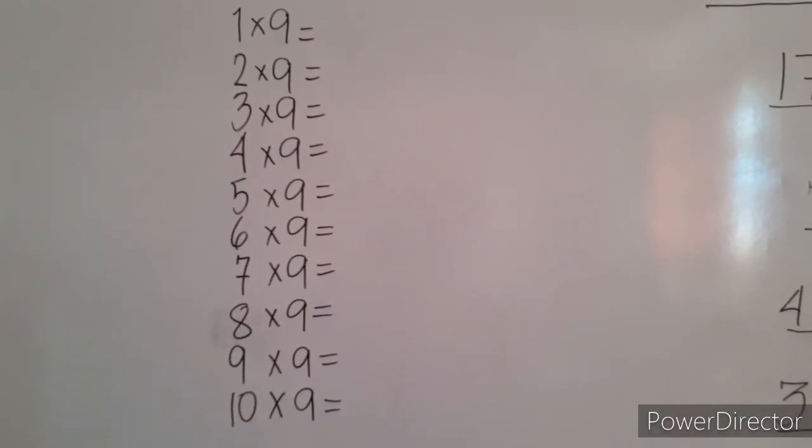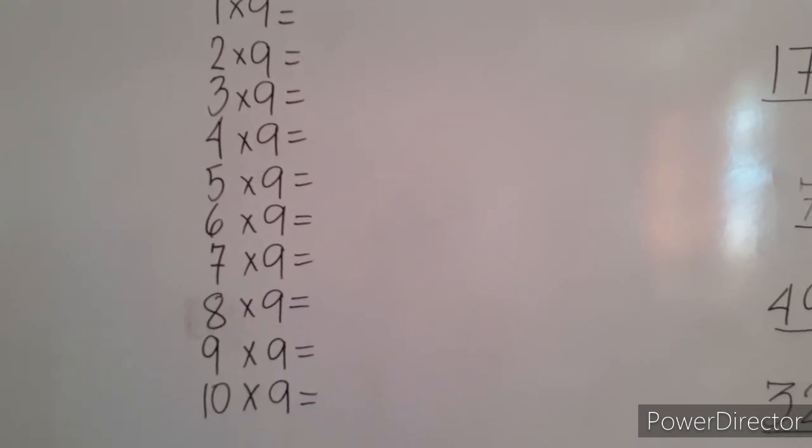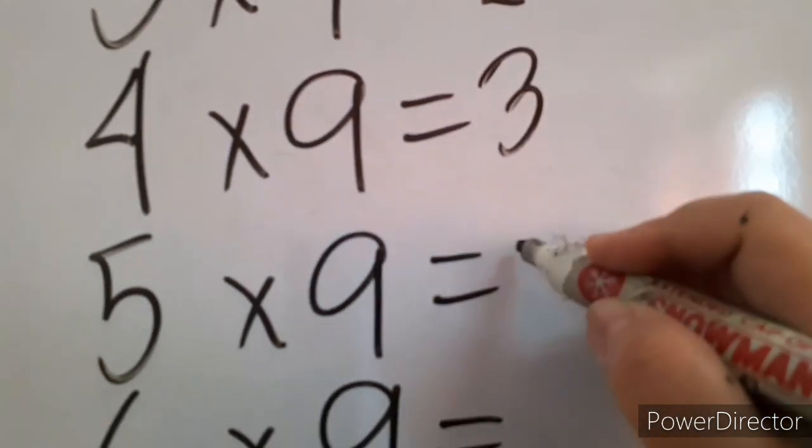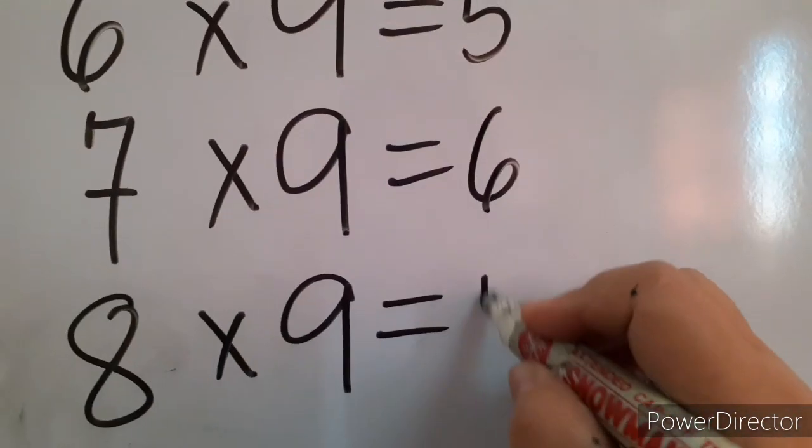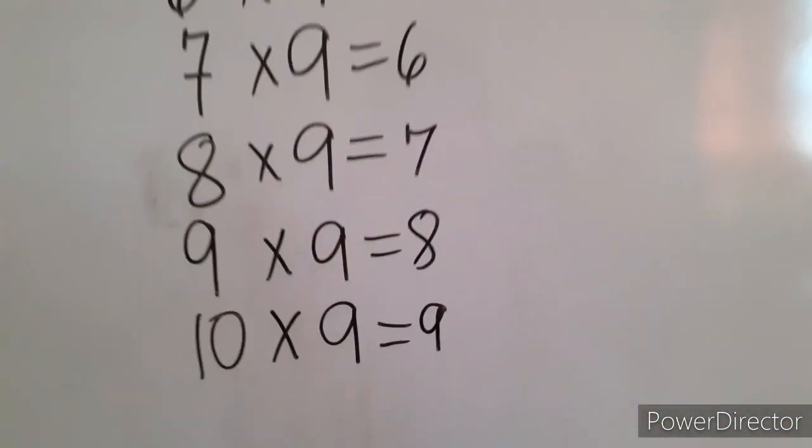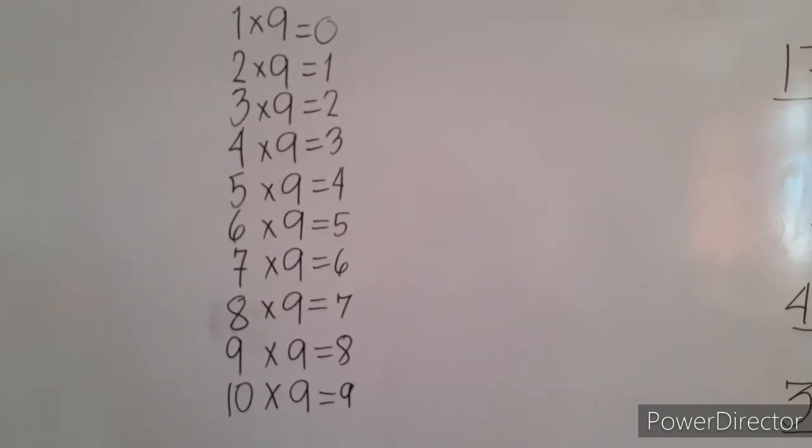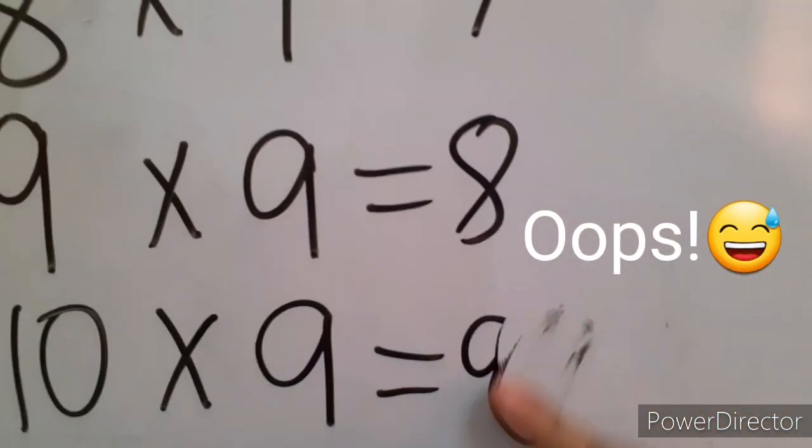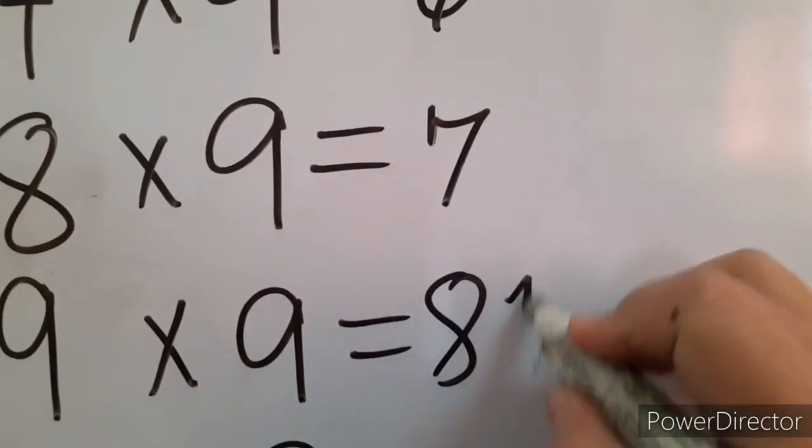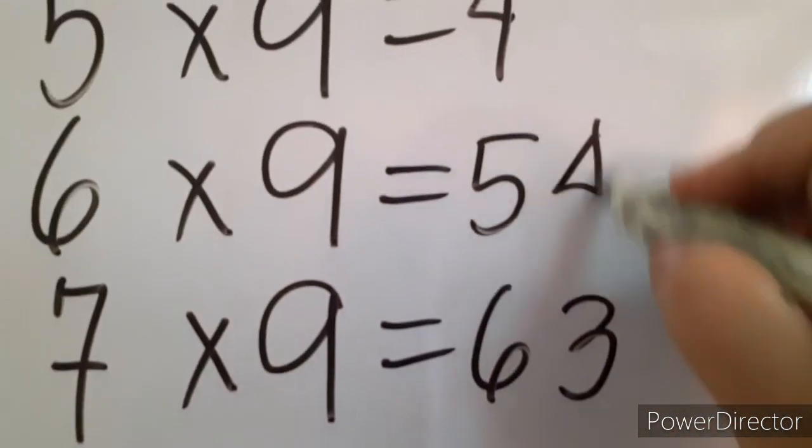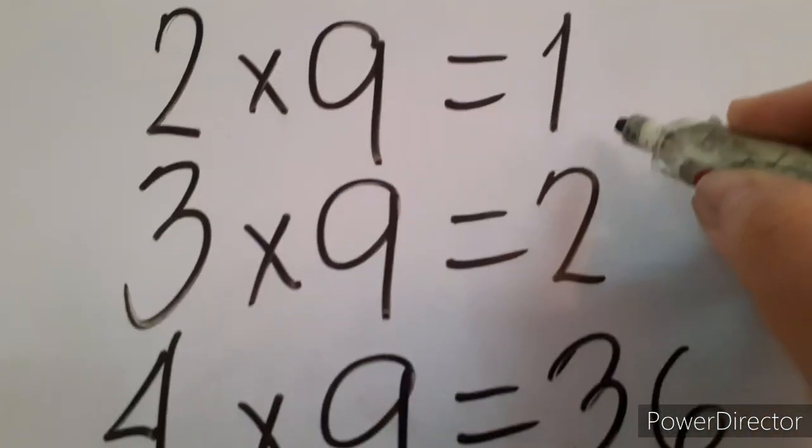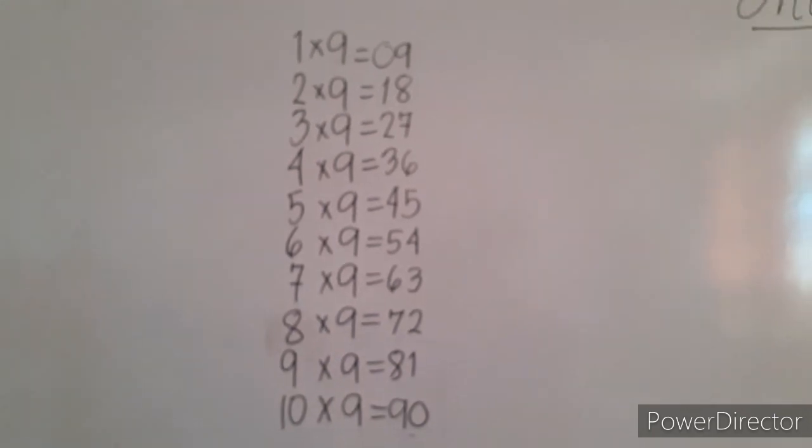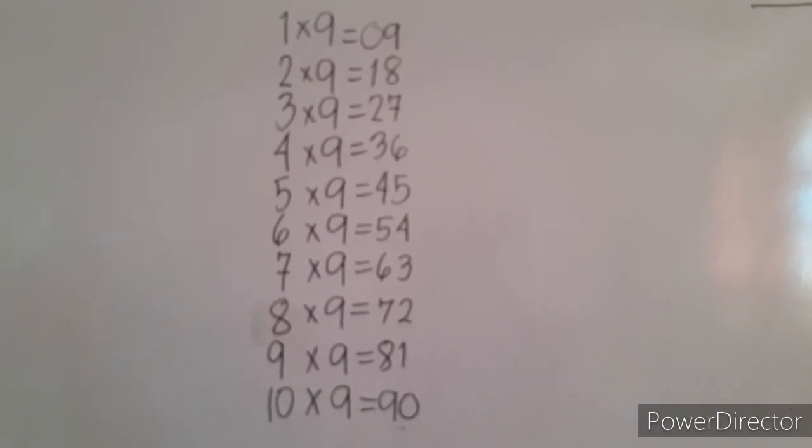Now, you might be familiar with this technique. 1 times 9 through 10 times 9. What we simply do is, we put consecutive numbers for the first digit, which is from 0 up to 9. And for the second digit, we also do 0 up to 9, but we start from the bottom. So there, we could easily answer the multiples of 9.